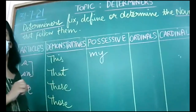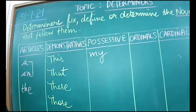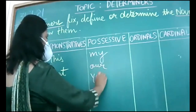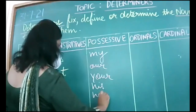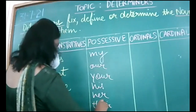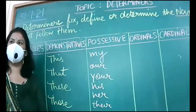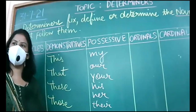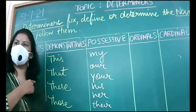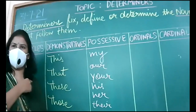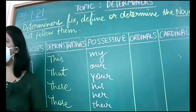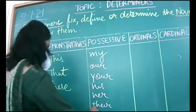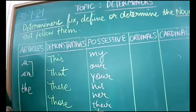Possessive determiners include: my, our, your, his, her, their — and also 'its.' These all fall into the category of possessive determiners. We will be doing exercises related to this as well.